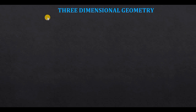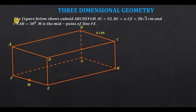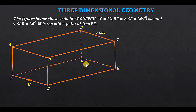Today we are looking at three-dimensional geometry. The figure shows cuboid ABCDEFGH. AC is 52 centimeters — AC is this diagonal here. BC is X as shown. CE is 28√3 centimeters, that is this diagonal here. Angle CAB is 30 degrees. M is the midpoint of line FE, so M is right here, the midpoint of FE.